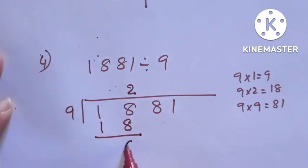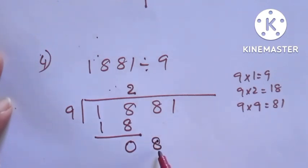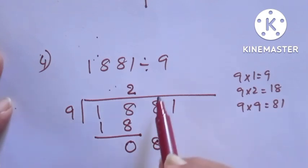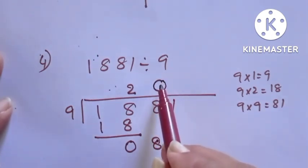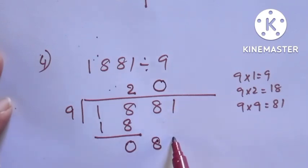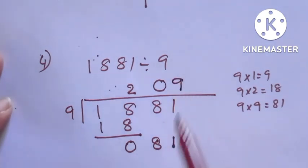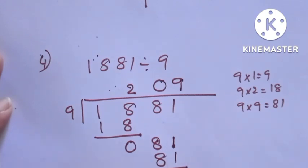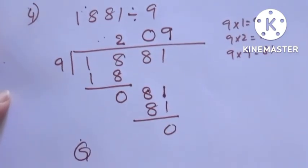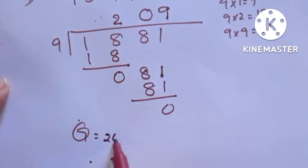Subtracting gives 0. Bring down the next digit, which is 8. Since 8 is less than 9, it will not go here, so we put 0 in the quotient. After putting 0 in the quotient, bring down the next digit. Now we have 81. How many times does 81 go? 9 nines are 81, so it goes exactly. We write 9 in the quotient, write 81 below, and subtract to get 0. The quotient is 209 and the remainder is 0.